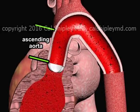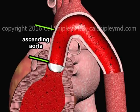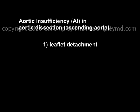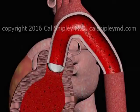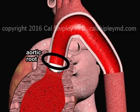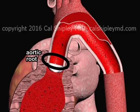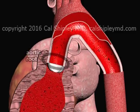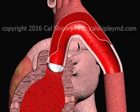It's important to note that aortic insufficiency occurs only in dissections which have involved the ascending aorta. There are three basic mechanisms by which aortic insufficiency may occur during aortic dissection. Let's start by looking at leaflet detachment. If the process of dissection moves down the ascending aorta, it may involve the aortic root, causing one of the leaflets to detach from the annulus.